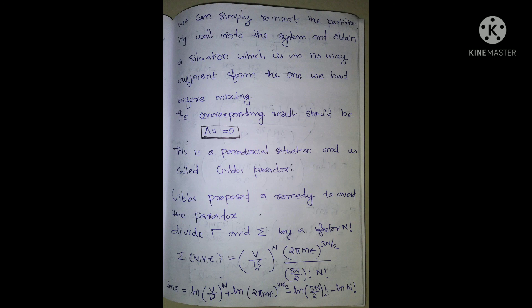Let's check the sigma equation. Sigma equals (V/h³)ⁿ times (2mE)^(3n/2) divided by (3n/2) factorial, divided by n factorial. Taking log sigma: log(V/h³)ⁿ plus log(2mE)^(3n/2) minus log(3n/2)! minus log(n!).